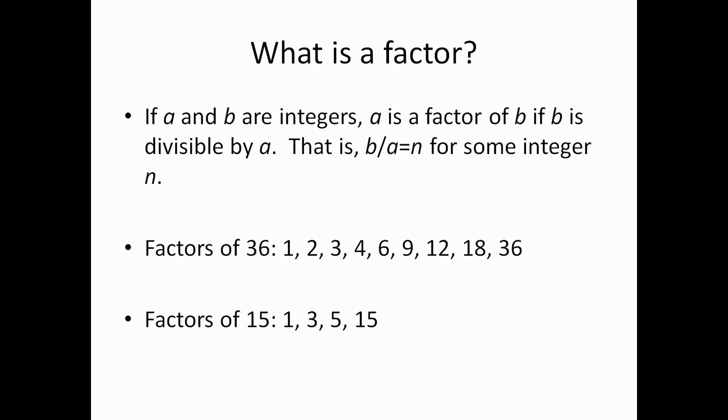But with 36, if you count those up, you're going to get, there's 1, 2, 3, 4, 5, 6, 7, 8, 9 total factors. So, in the case of 36, there's an odd number of total factors. And that happens because 36 is a perfect square.